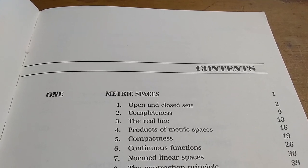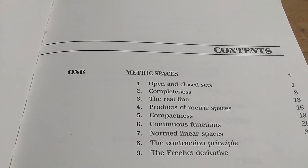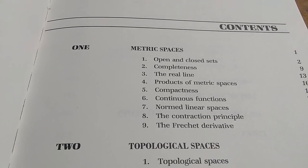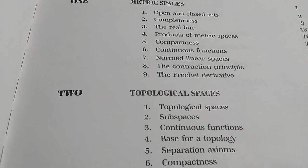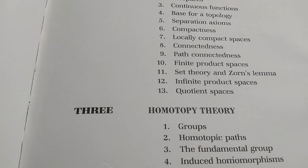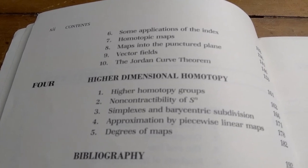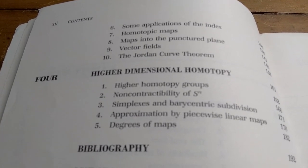This is the table of contents. The first chapter is on metric spaces, so it goes through and talks about everything. Then it goes into topological spaces, and then it goes into homotopy theory. Then at the end, it goes into higher dimensional homotopy.